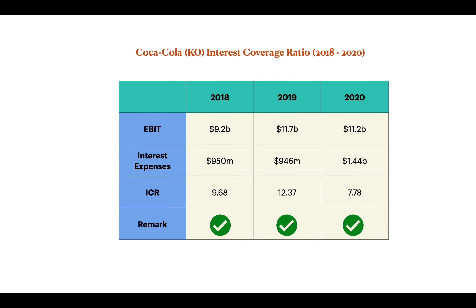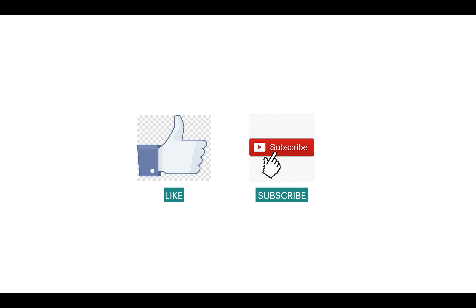These high interest coverage ratios — 9.68, 12.37, and 7.78 — show that Coca-Cola is in a very strong financial situation, and there is no risk of bankruptcy or failing to make interest payments anytime soon. If you enjoyed the video, please consider subscribing to the channel, and good luck with your journey.